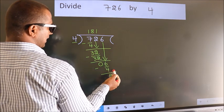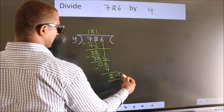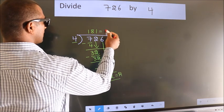No more numbers to bring down, so we stop here. This is our remainder. This is our quotient.